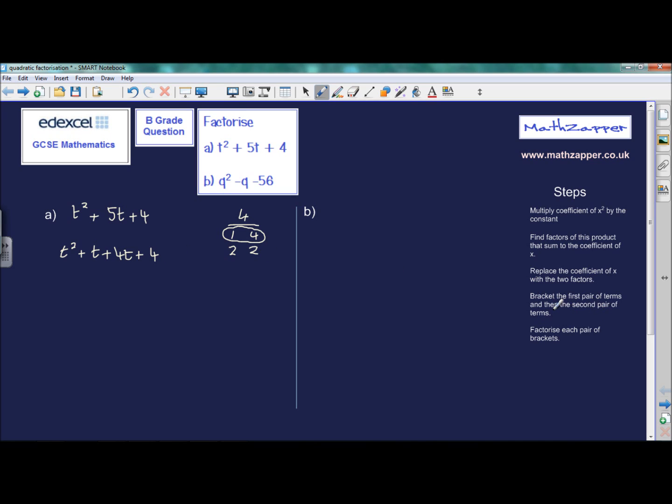Bracket the first pair of terms. So put a bracket around the first pair of terms. And then the second pair of terms as well. You'll notice that there's an operator in between the brackets. It could be a minus. Finally, factorize each pair of brackets.